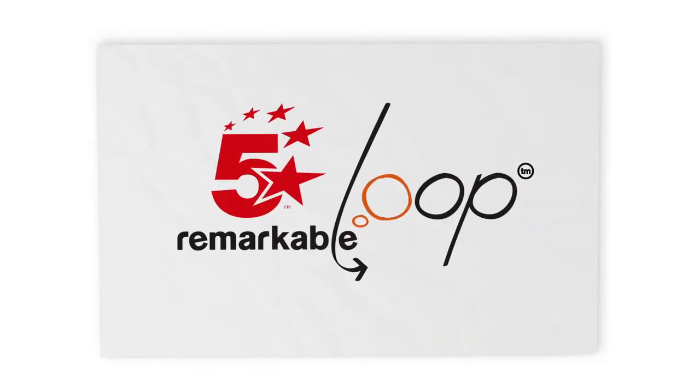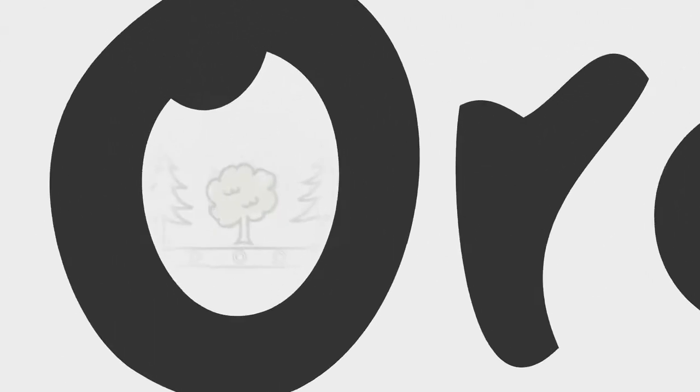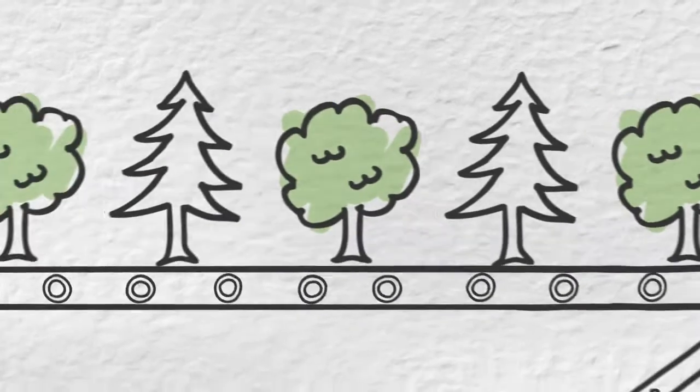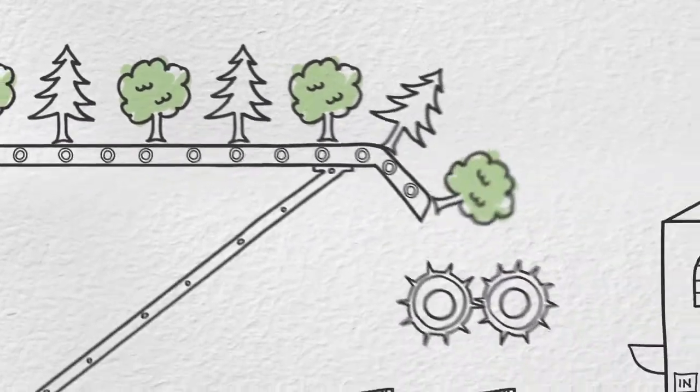This is a five-star remarkable loop sheet of paper. A normal sheet of paper begins its life as wood pulp from freshly cut trees. It takes nearly three tons of wood pulp to make one ton of office paper.